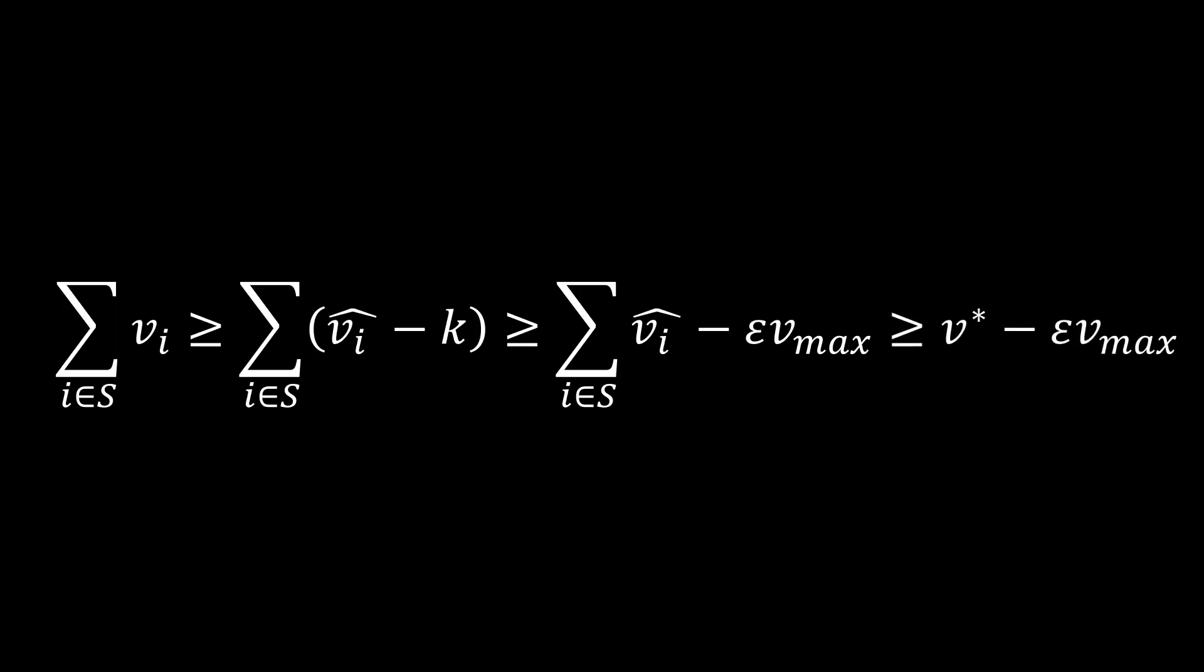And since we rounded up, this must be larger than the optimal solution for the original values. For the value of the optimal solution to the original problem, we write V star. Finally, note that this optimal solution is always at least Vmax, since we could always only place the most valuable item in the knapsack. If it didn't fit into the knapsack alone, the item would not need to be considered.